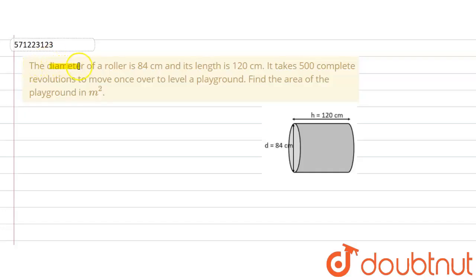The given question says that the diameter of a road roller, which is of a cylindrical shape—the diameter of this cylinder is given as 84 cm.